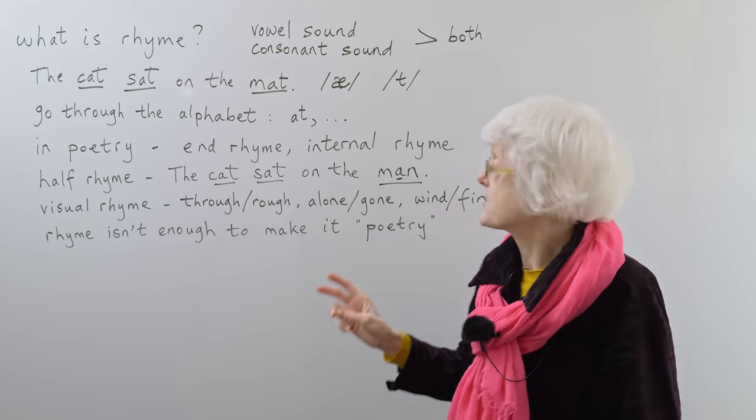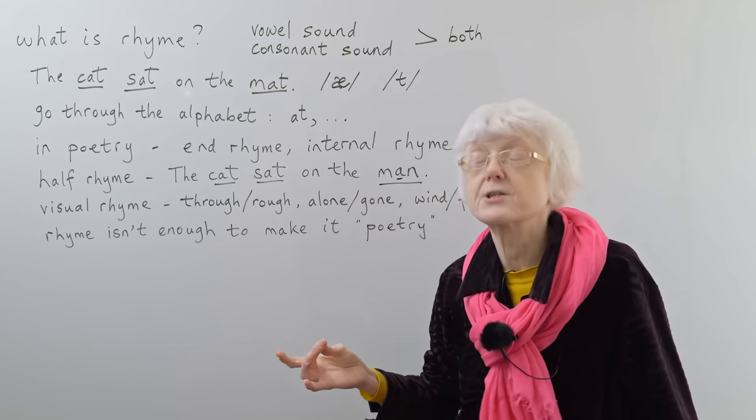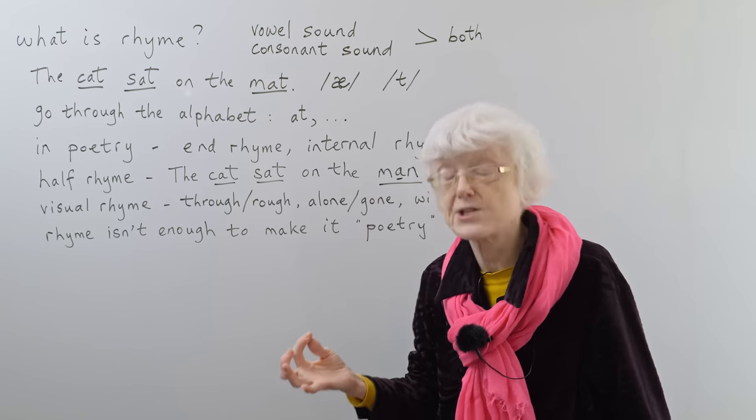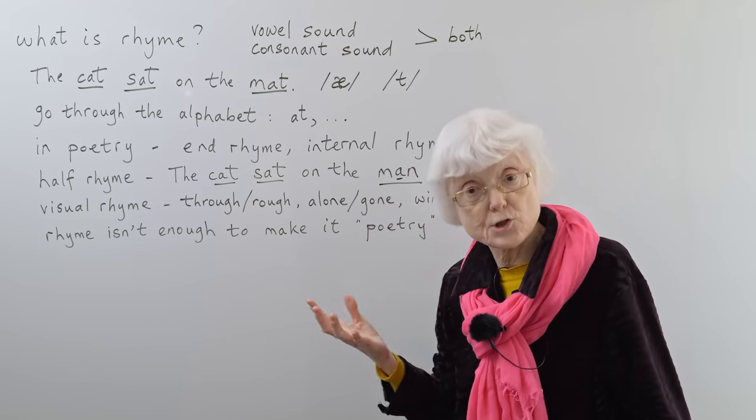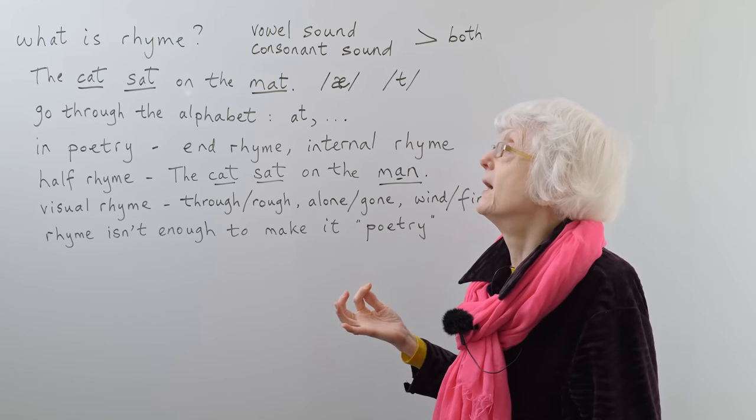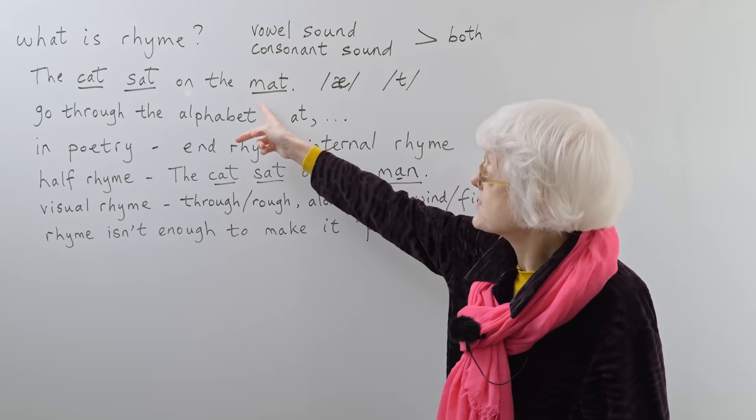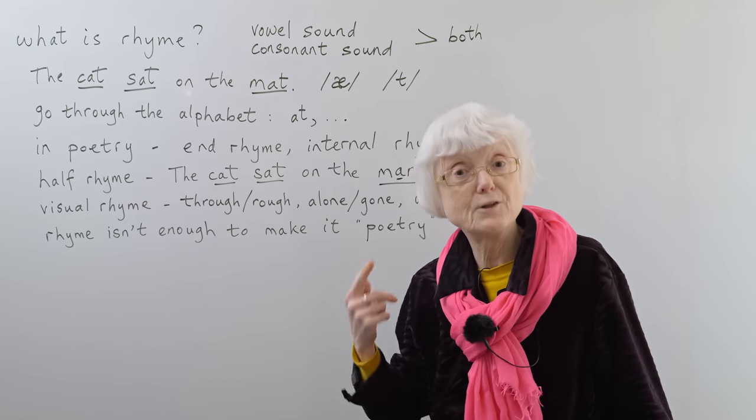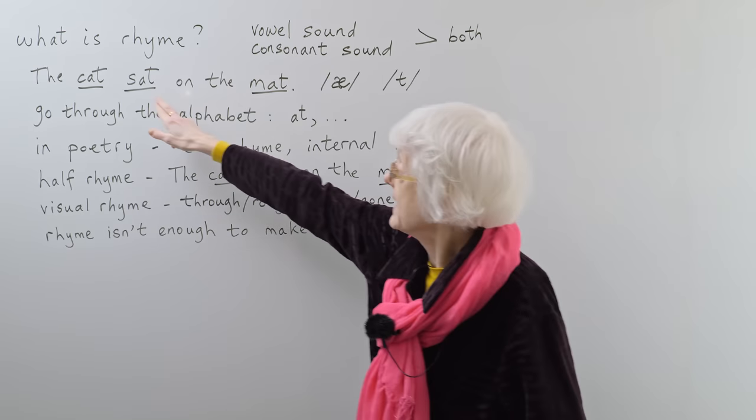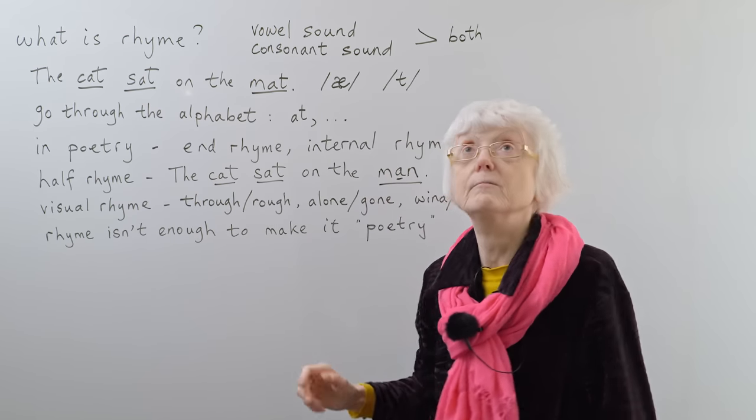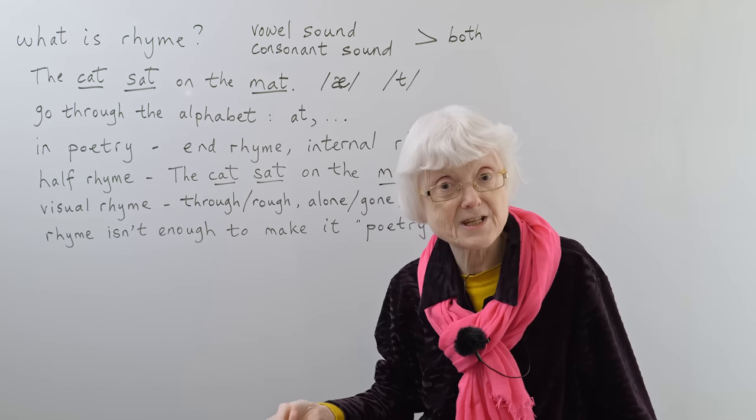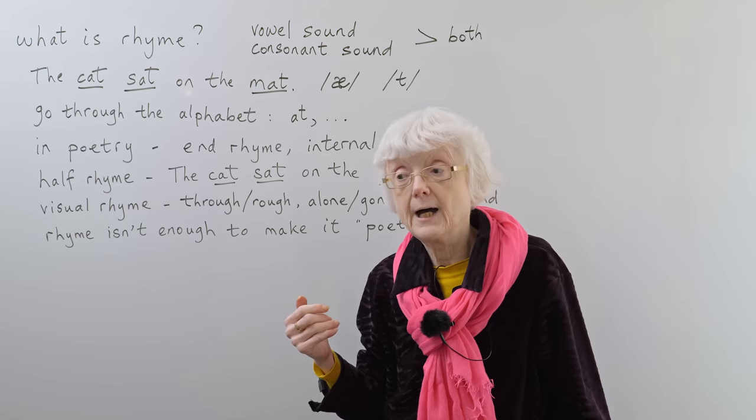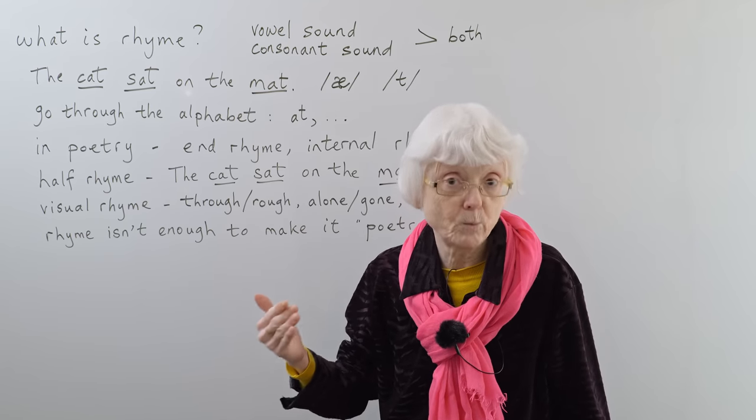B, bat. C, cat. F works with it, fat. H, hat. Mat. P, pat. R, rat. Sat. V, vat. So you just go through the letters of the alphabet and see if that's a real word or not.